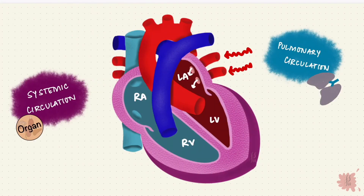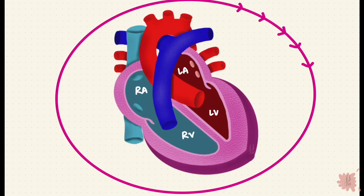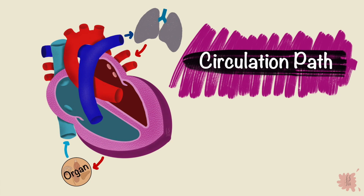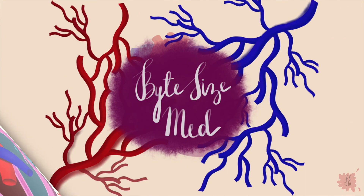The last step is that this oxygenated blood passes through the mitral valve to reach the left ventricle, and the journey is complete — only to repeat the cycle over and over again. And that is the circulation pathway. If this video helped you, give it a thumbs up, share, and subscribe. Thanks for watching and I'll see you in the next one.